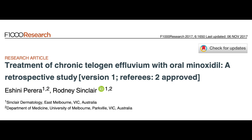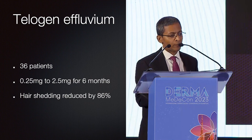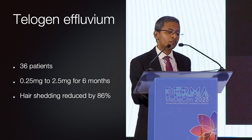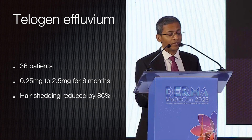Chronic telogen effluvium is another common indication. Again from Professor Sinclair in a series of 36 patients, he used low doses. He also noted that whether minoxidil is used as monotherapy or in combination with other drugs, the response is just as good, suggesting it is minoxidil working on its own. In this series, using it for at least six months resulted in hair shedding decreasing by 86%, which was a significant result.